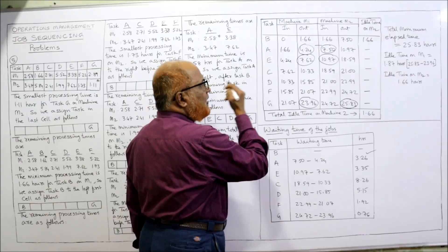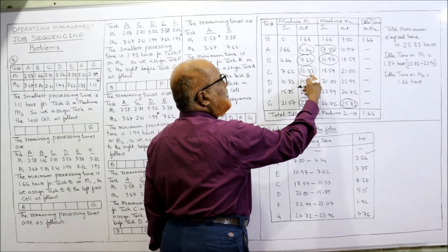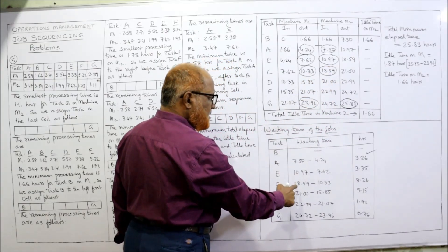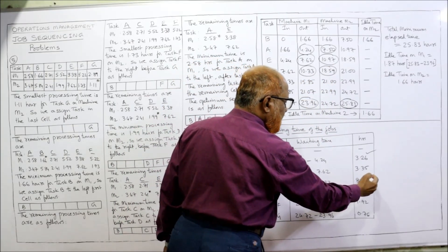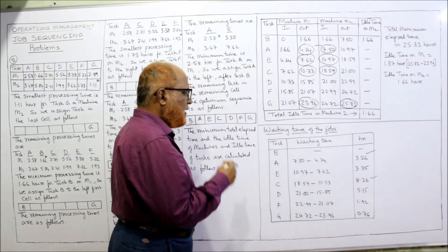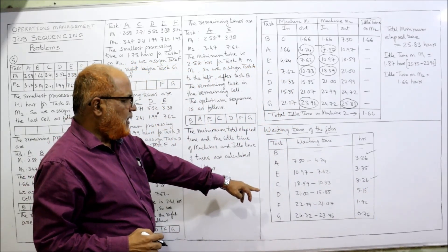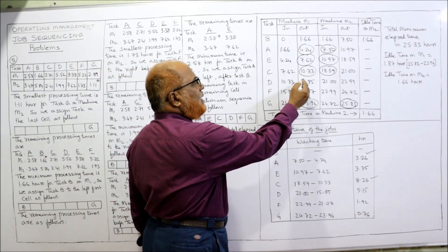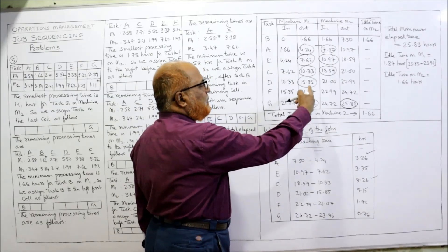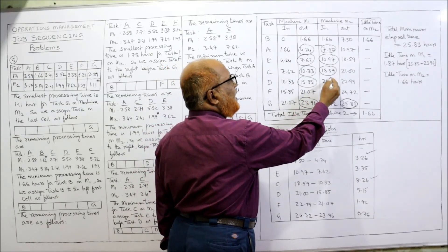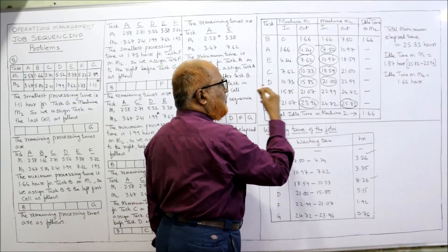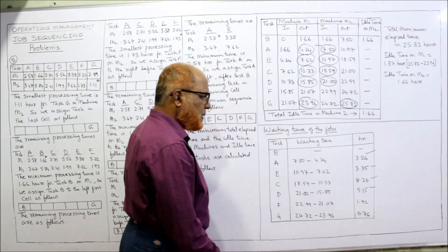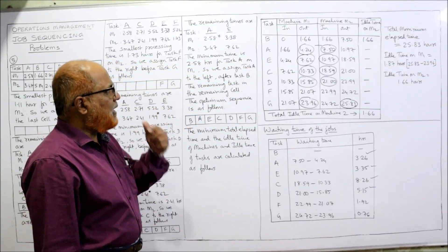Job C was completed on M1 at 10.33, but M2 starts at 18.59: waiting time = 18.59 − 10.33 = 8.26 hours. Job D was completed on M1 at 15.85, but M2 started at 21: waiting time = 21 − 15.85 = 5.15 hours.